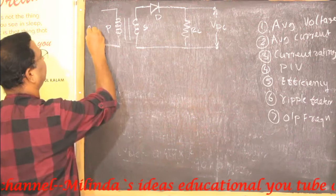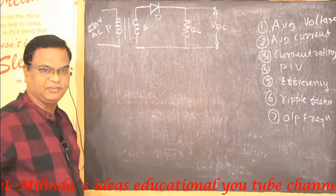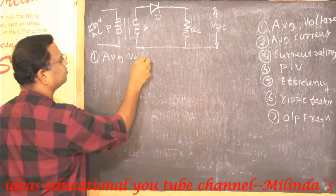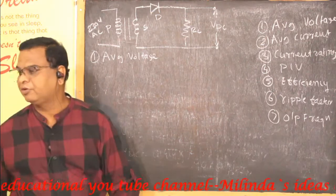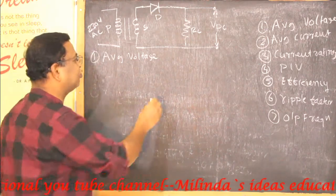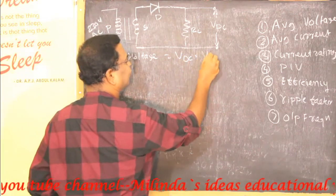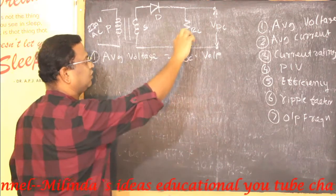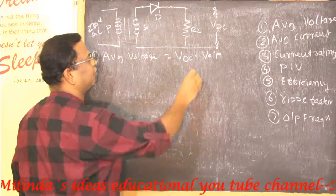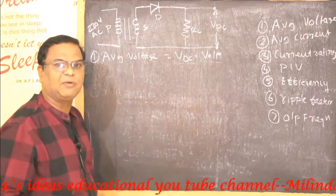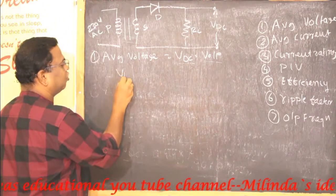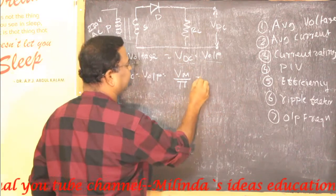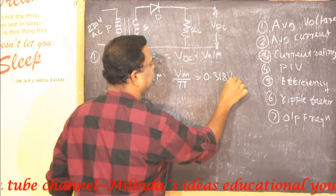This is a circuit diagram of a half-wave rectifier with an input voltage of 230 volt AC. The first parameter is average voltage. Average voltage is also known as VDC or V output — the potential developed across the load resistor. The formula to find out the average voltage or DC voltage is: V output equals Vm upon pi.